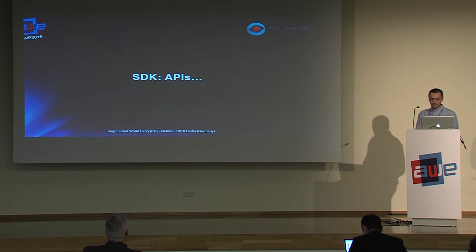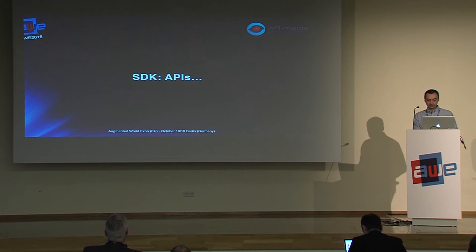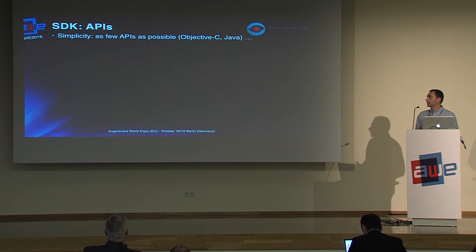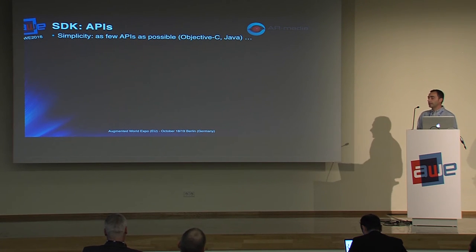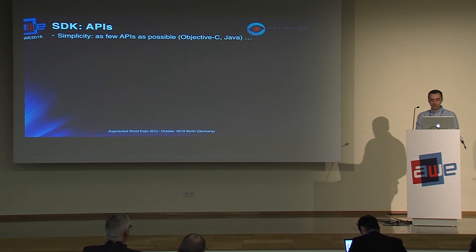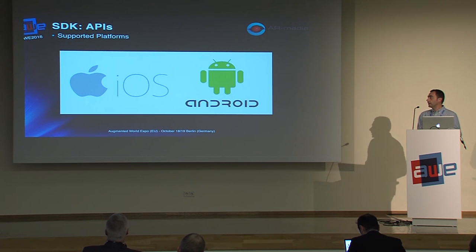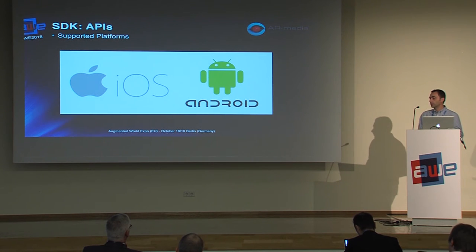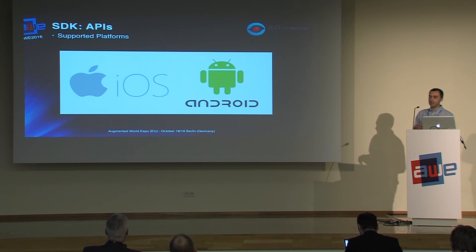Now let's look at the APIs. The basic design principle behind the SDK from the beginning was simplicity — we wanted to provide a very capable SDK but keep it as simple as possible in terms of APIs. We primarily targeted iOS and Android, though for developers who need Windows or Mac OS we also provide versions of the SDK for those platforms.